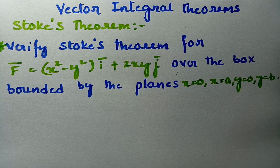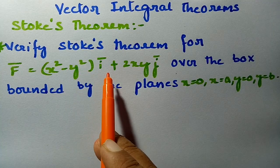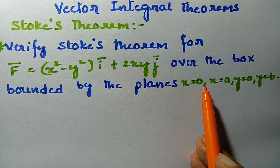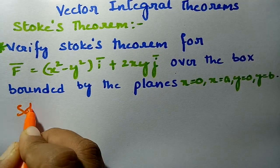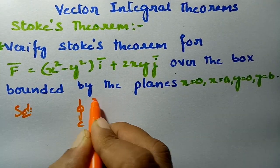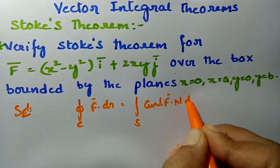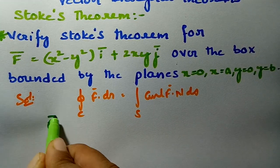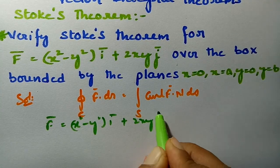Let me start by verifying this most important problem on Stokes' theorem from vector integral theorems. The problem is ready on the screen and we have to verify Stokes' theorem for F̄ given as (x² - y²)ī + 2xy j̄ over the box bounded by the planes x = 0, x = a, y = 0, y = b. According to Stokes' theorem, the line integral of F̄·dR̄ equals the surface integral of curl F̄·n̂ dS.